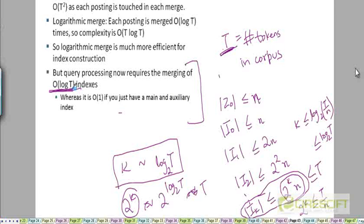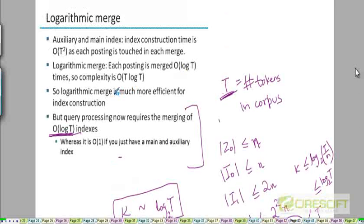As an exercise, try to argue why this logarithmic merge scheme is more efficient than the earlier main-and-auxiliary index scheme. Look at the time complexity of index construction and argue why logarithmic merge is more efficient, using big-O notation as typically covered in an algorithms course.